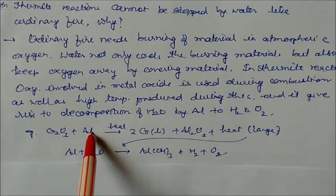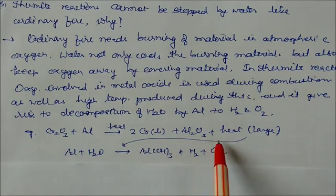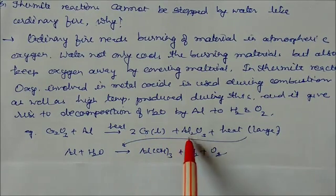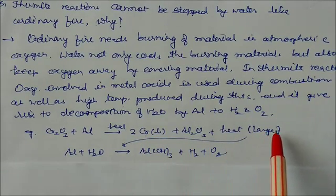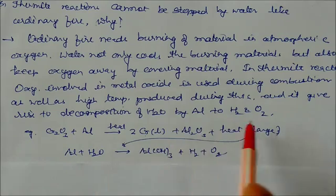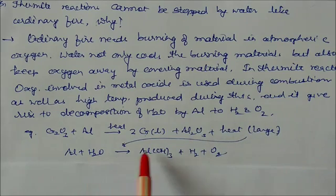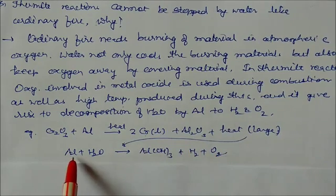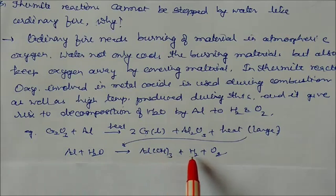The thermite reaction: Cr2O3 gives Cr in liquid state, Al2O3, and heat in large quantity. This heat reacts with water and decomposes it into H2 and O2. Al reduces H2O to H2 and gets oxidized to Al2O3.